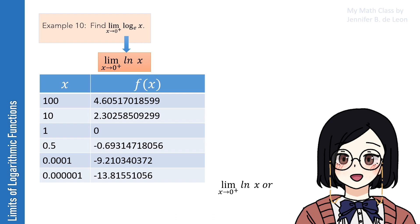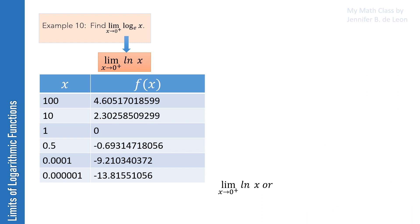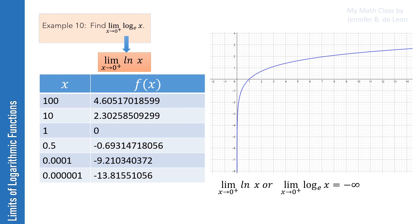Hence, the limit of ln x as x approaches 0 from the right — or equivalently, the limit of the logarithm of x to the base e as x approaches 0 from the right — is negative infinity. We confirm this using the graph of ln x. Looking at the graph, we can see that as the value of x approaches 0 from the right, the graph decreases without bound.